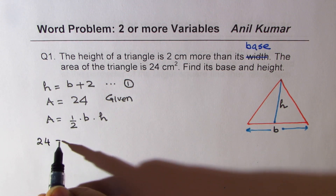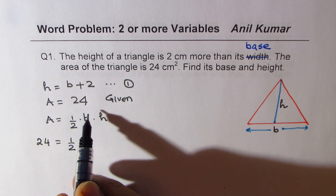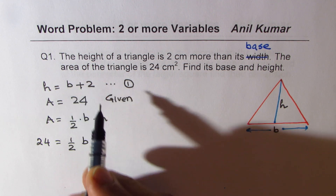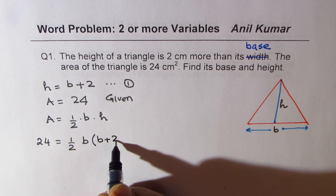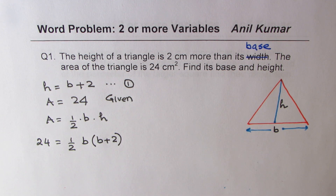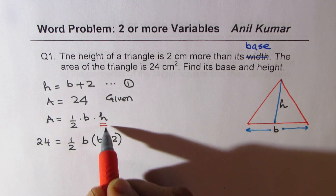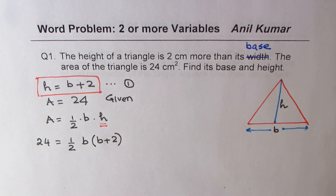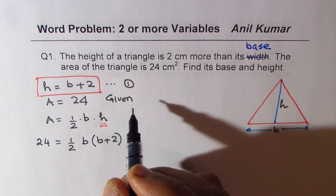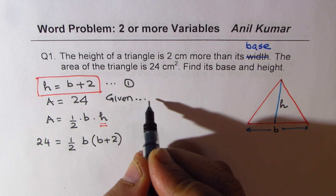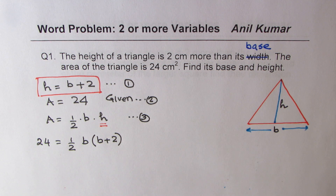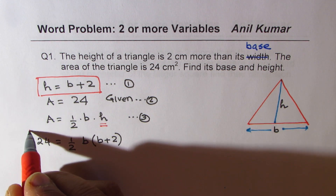So area is 24. We'll write 24 for area, half of base B, and height can be replaced by B plus two. What we did here was replace height with the expression B plus two, since we have been given that condition. This is from equation one. So we combined the given information — call this equation two — and the area formula, equation three — and got our combined equation.